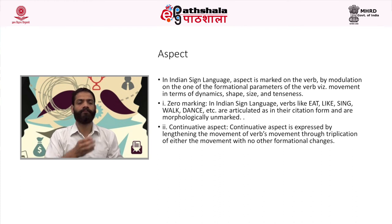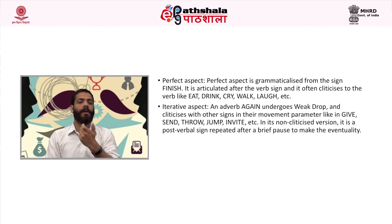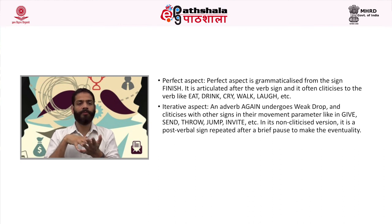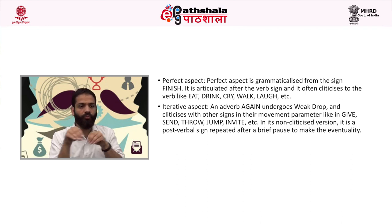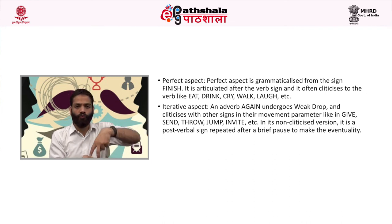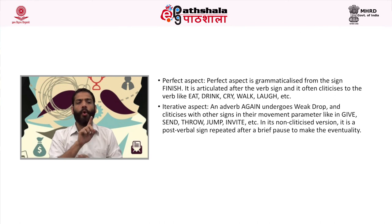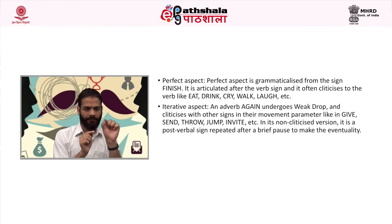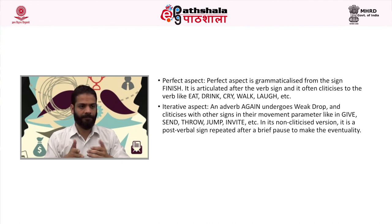The next is perfect aspect, grammaticalized from the sign FINISH. It is articulated after the verb sign and is often cliticized to verbs like eat, drink, cry, walk, laugh, etc. For example, 'you have laughed' is signed as: you, laugh, finish. The fourth is iterative aspect — an adverb again undergoes weak drop and cliticizes with other signs in their movement parameter like give, send, throw, jump, invite, etc. In its non-cliticized version, it is a post-verbal sign repeated after a brief pause. For example, 'Ram gives a book to Sita again and again' — the sign for again is duplicated.